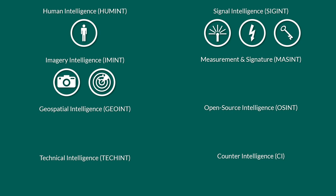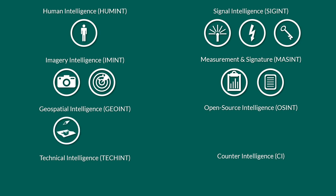Measurement and signature intelligence deals with the quantitative and qualitative analysis of data to derive distinctive characteristics. It often uses existing data from various branches. For instance, various information collected by radar and other sources are combined to locate or classify a target. Geospatial intelligence combines various data like imagery and geographical locations into simple products like maps, or more complex products like maps that indicate the location of enemy troops and their movement.